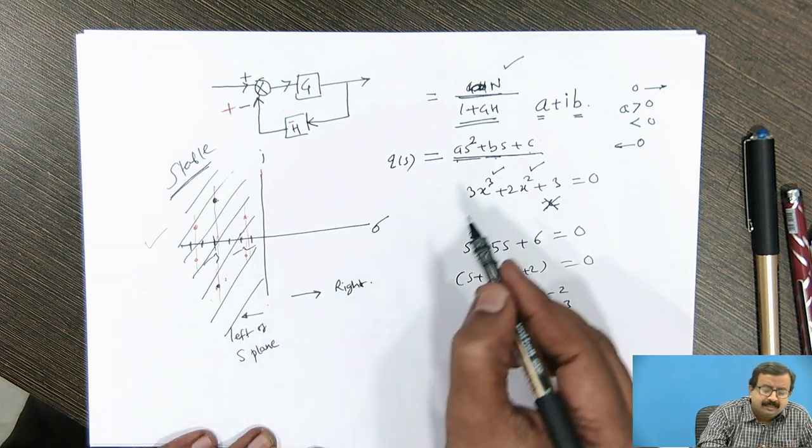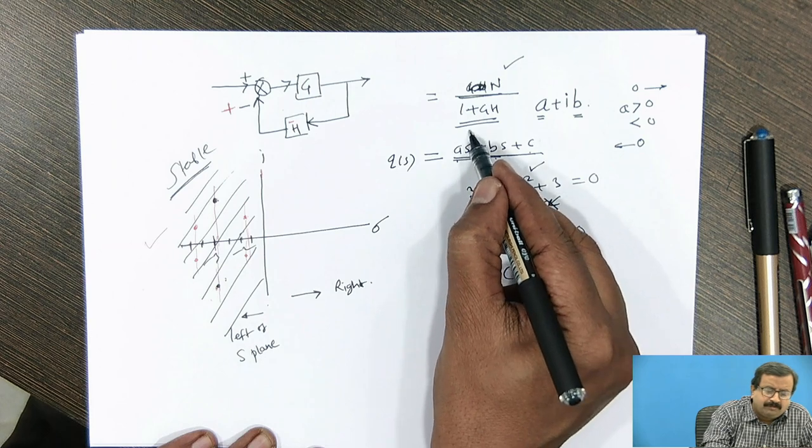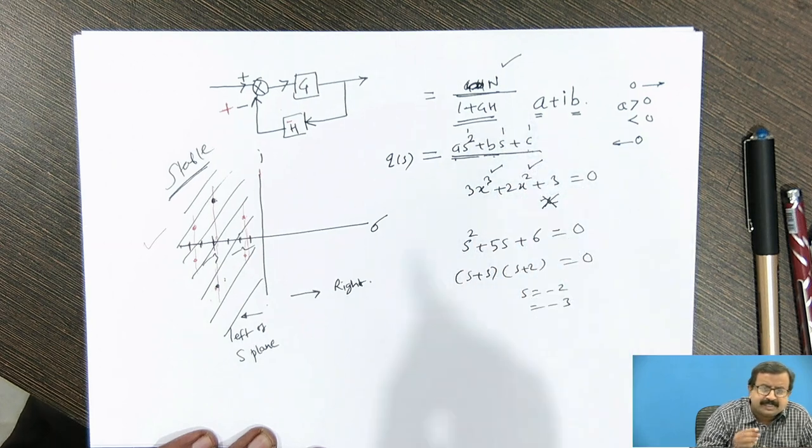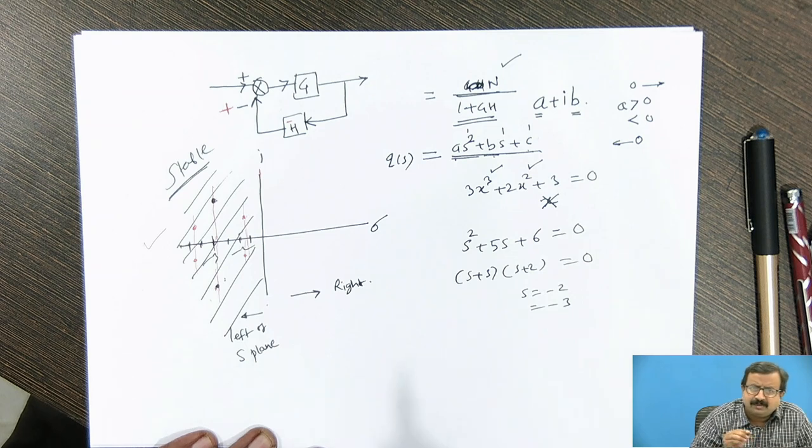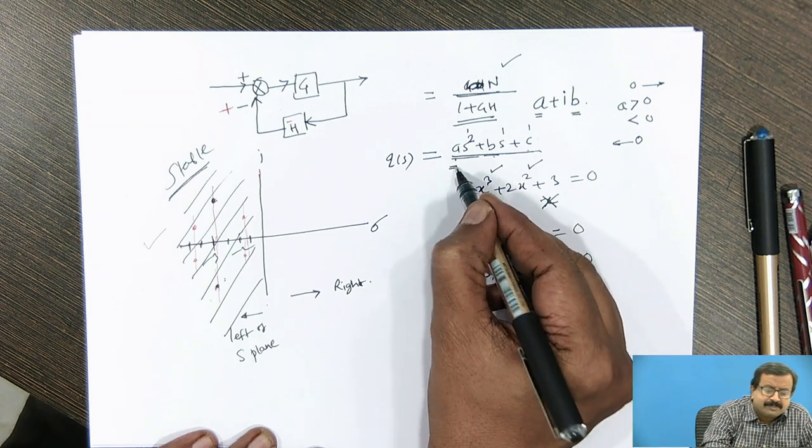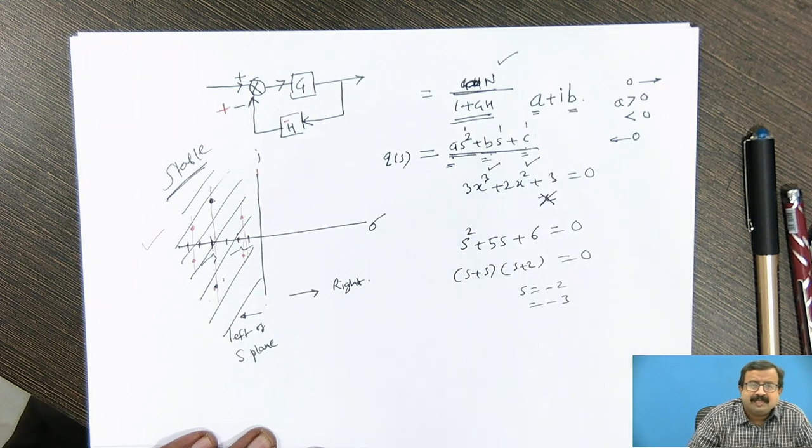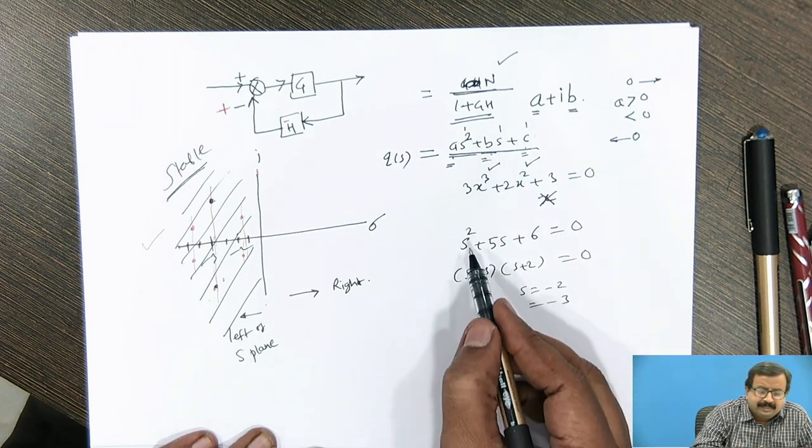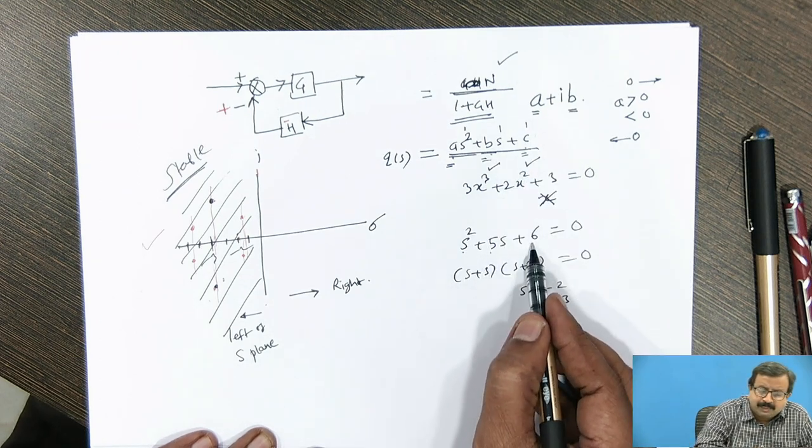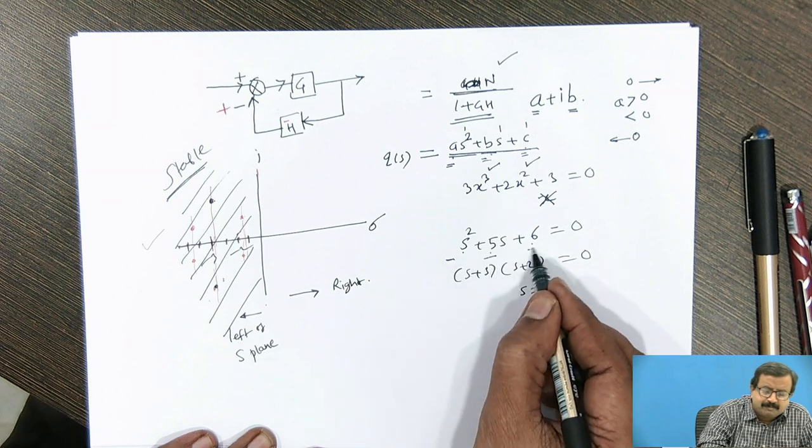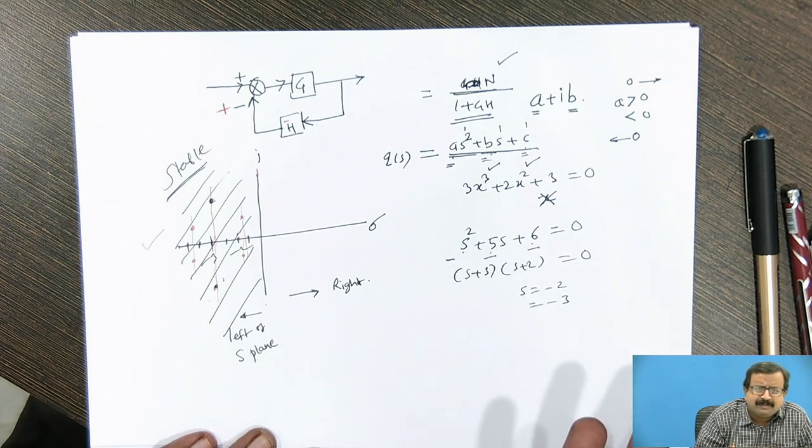Second important condition is that the coefficients of all the terms, that is s square, s and constant, or s cube, s square, s and constant must have same sign. Same sign means it can be plus, plus, plus or it can be minus, minus, minus. Because if it is minus, minus, minus, it makes no difference.